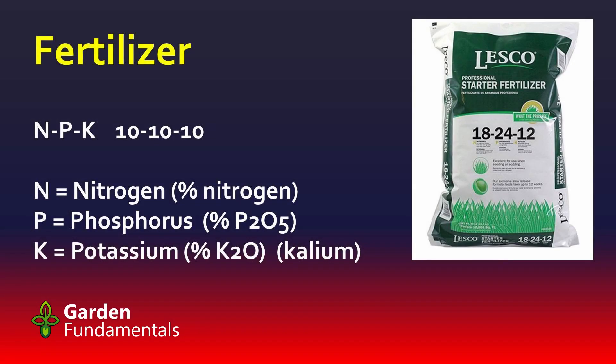Let's talk a little bit about fertilizer. The fertilizer that we buy has a number on it called NPK. That represents the nitrogen, phosphorus, and potassium — three numbers. A very common fertilizer is a 10-10-10, and that means 10% nitrogen, 10% phosphorus, and 10% potassium. Or at least, that's what most sites and most books will tell you.